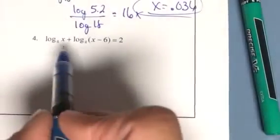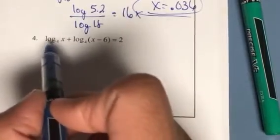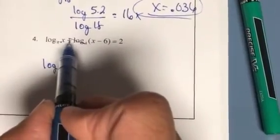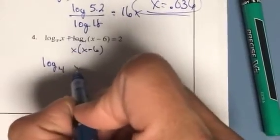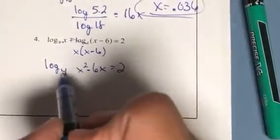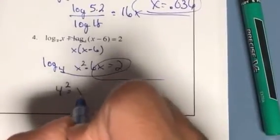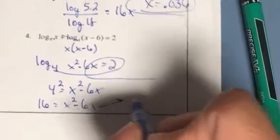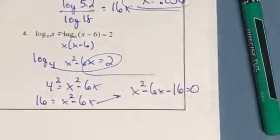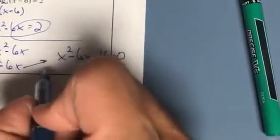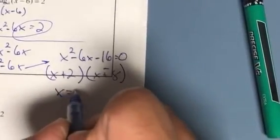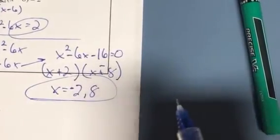Problem 4 also has multiple logs. Combine them first, then isolate: log base 4 of x + log base 4 of (x - 6) = 2 becomes log base 4 of [x(x-6)] = 2. Convert to exponential: 4² = x(x-6). 4² = 16, so x² - 6x = 16. Rearrange: x² - 6x - 16 = 0. Factor: (x - 8)(x + 2) = 0, so x = 8 or x = -2.